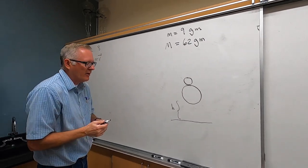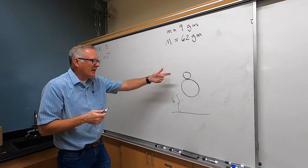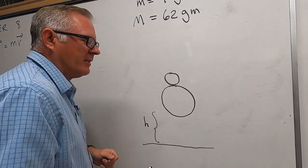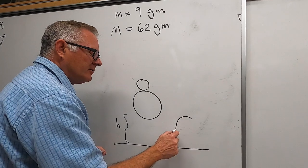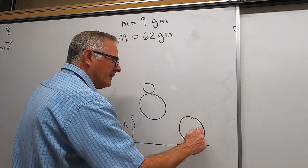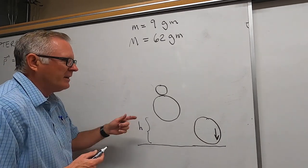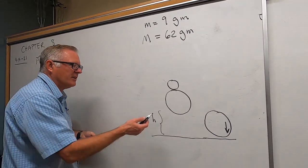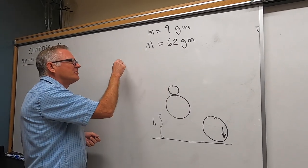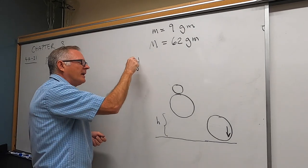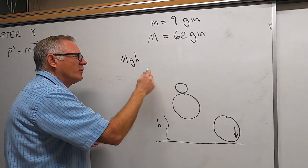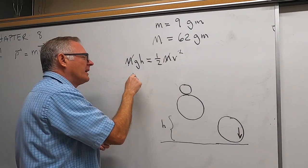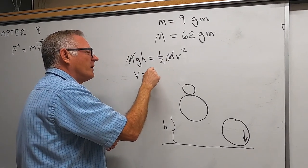Let's assume that h is the height I'm dropping it from, and I want to know how high the little ball shoots up. When I let this thing go, they're both going to drop together because everything falls with g. Looking at just the big ball: it started from rest, so MgH equals one-half MV squared. The M's cancel, and we get the velocity equals the square root of 2gH.